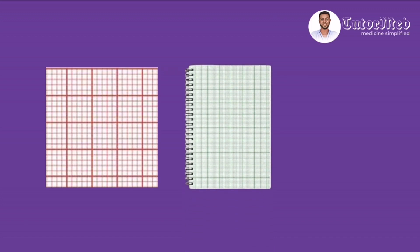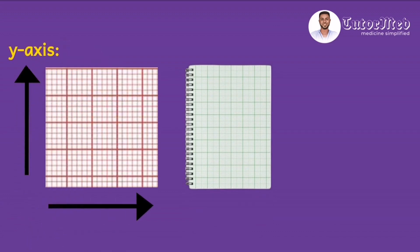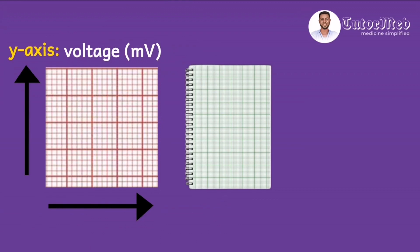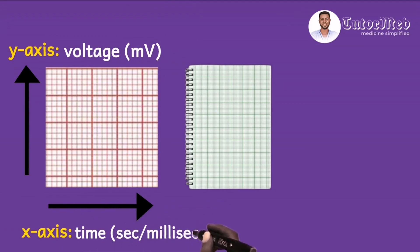Remember that the ECG is a graphical representation of the heart's electrical activity. Just like the graph book we used in mathematics, this strip has an x-axis and a y-axis. The y-axis measures the amplitude of each wave from the baseline, recorded in voltage in millivolts. The x-axis measures the duration of these waves, recorded in time — seconds, although some use milliseconds.